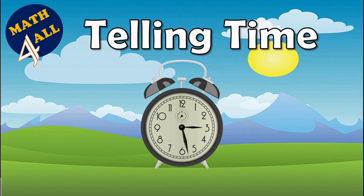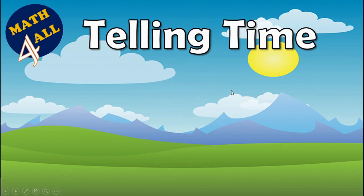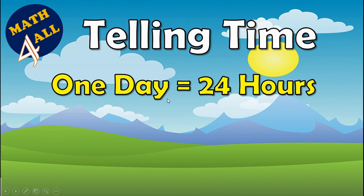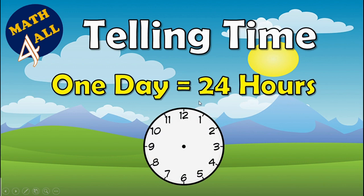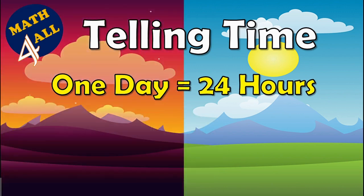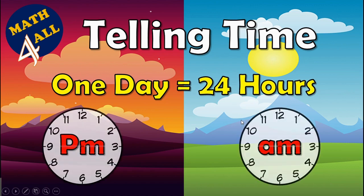It's time to talk about time. Here we have a clock — a tool that we measure time with. The measuring unit in this clock is called hours. One day equals 24 hours, but this clock only shows 12 hours. So you have to know that we have 12 hours of day (AM) and 12 hours of night (PM).